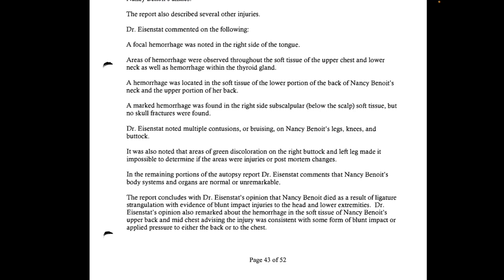Areas of hemorrhage were observed throughout the soft tissue of the upper chest and lower neck, as well as hemorrhage within the thyroid gland. A hemorrhage was located in the soft tissue of the lower portion of the back of Nancy's neck and the upper portion of her back. A marked hemorrhage was found in the right side subscapular soft tissue below the scalp, but no skull fractures were found. Multiple contusions — bruising — were noted on Nancy's legs, knees, and buttock.